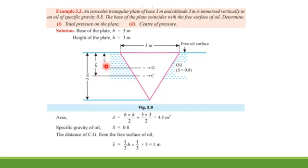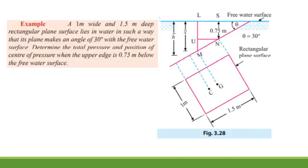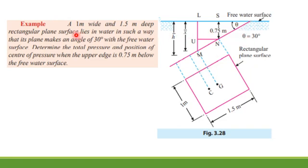The center of gravity was 1 meter and the center of pressure is 1.5 meters. Now let's solve an example related to an inclined submerged surface. The previous two examples involved vertically immersed surfaces; now we will solve one submerged at an angle.